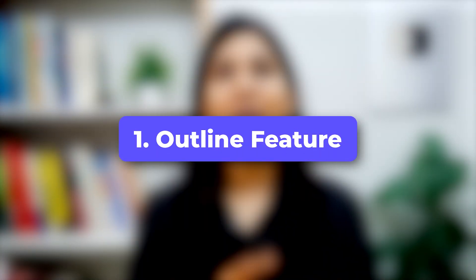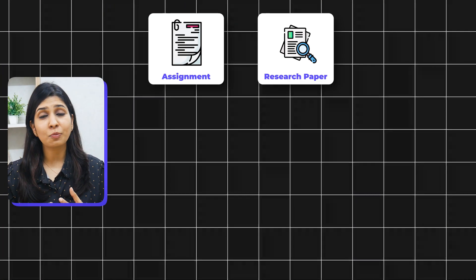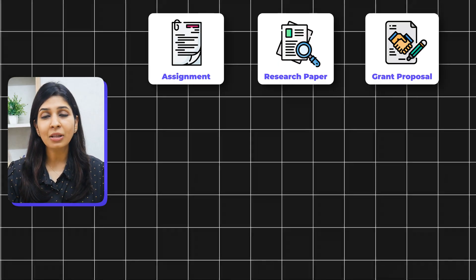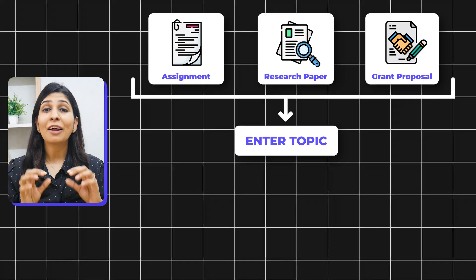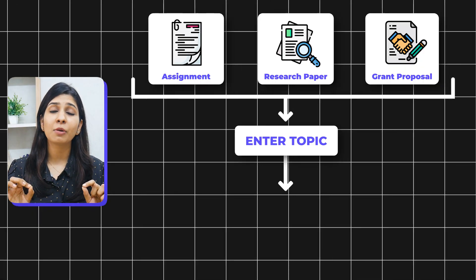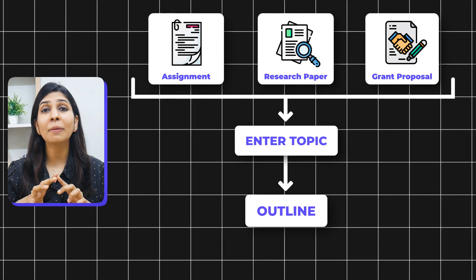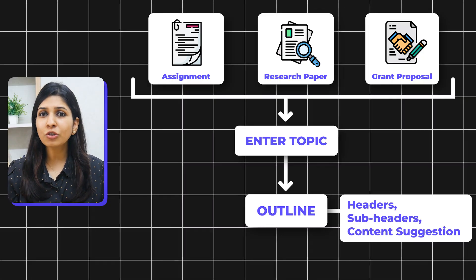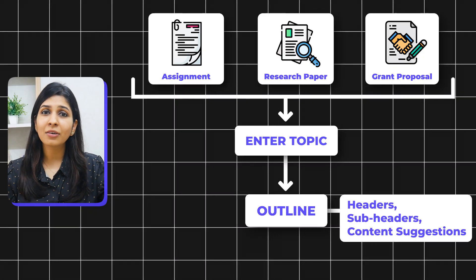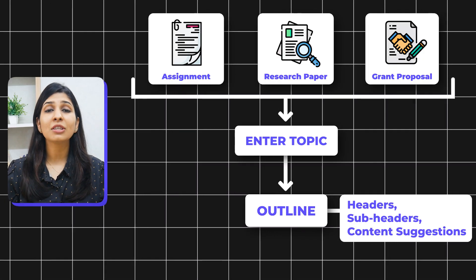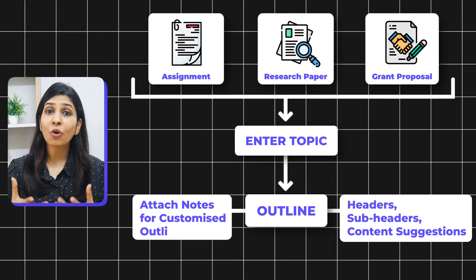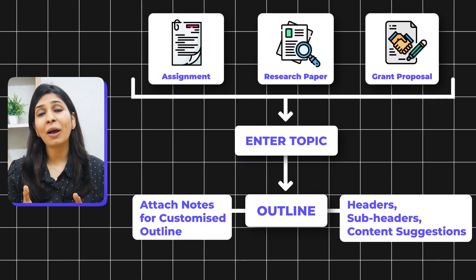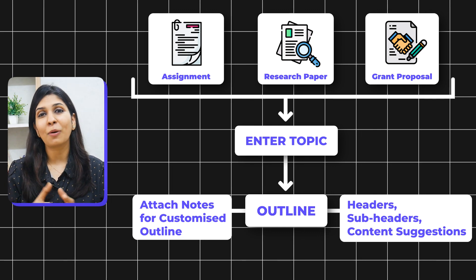The first feature is the outline. Whether you're working on an assignment, a research paper, or even a grant proposal, simply tell PaperPal the document you're working on and within seconds, it will provide a complete outline — not just headers, but sub-headers and even content suggestions for what you're supposed to write under each section. You can also attach your own notes and PaperPal will draft the outline accordingly.